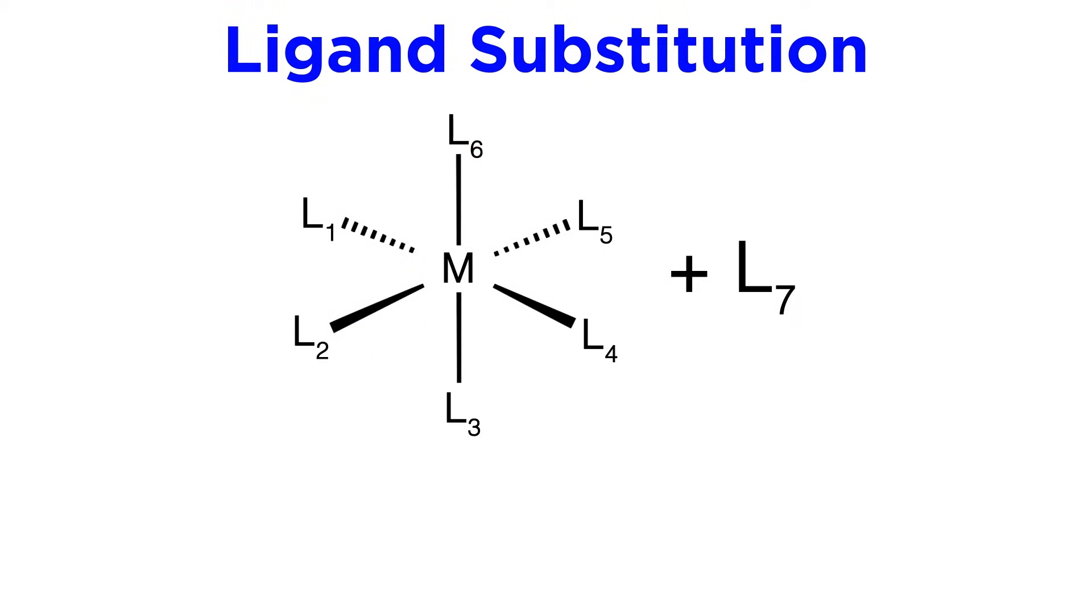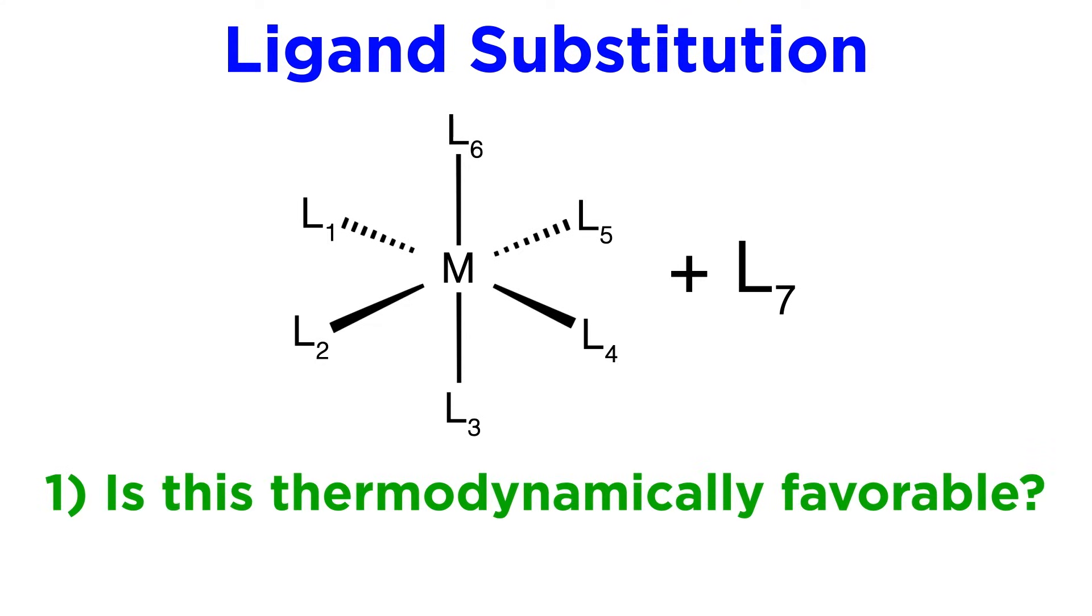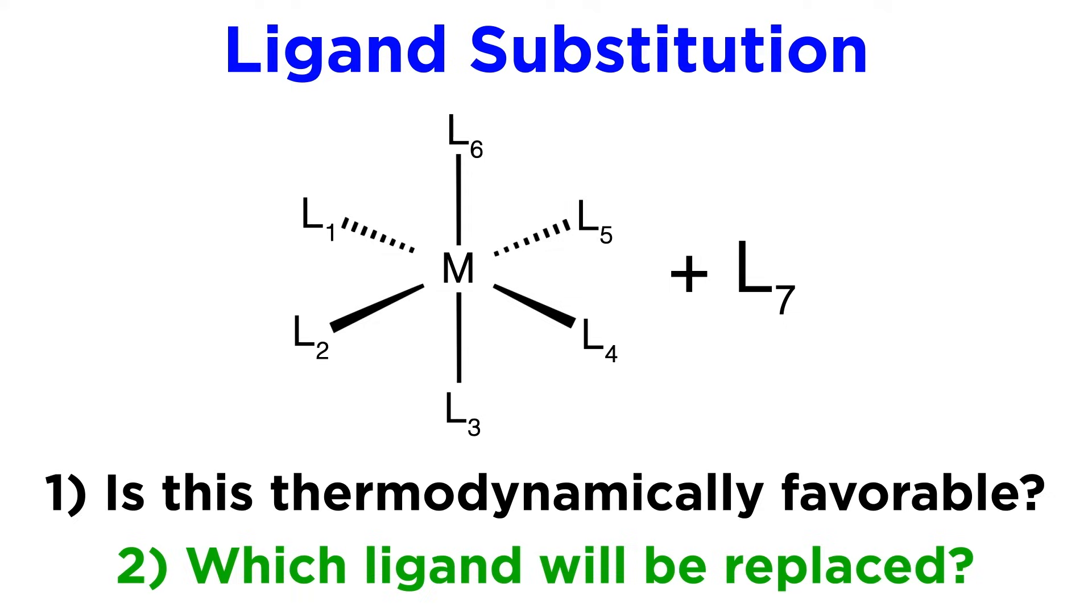Now we must address an important question. If a transition metal complex has several different ligands, and it is to undergo ligand exchange, will the exchange we want to carry out be thermodynamically favorable, and which ligand will be replaced? There is a lot to discuss here, so let's look first at something called trans-influence.